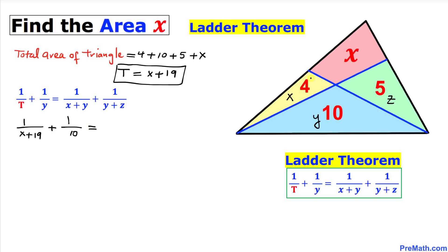Plus one over y, in our case is 10, equals one over x plus y. In our case x plus y is going to be 4 plus 10, so that becomes one over 14, plus one over y plus z. In our case y plus z is going to be 10 plus 5, so this is going to become one over 15.